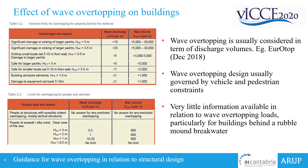Wave overtopping is usually considered in terms of discharge volumes. The tables here on the left are extracted from the Eurotop manual, which gives guidance on calculating overtopping volumes for coastal defence structures and the recommended mean limits for volumes of wave overtopping. The most onerous conditions are those for the design of people on a breakwater, as well as the effect on boats or structural building elements behind the breakwater. Because this is how wave overtopping is usually considered, there's very little information on the loading due to wave overtopping, particularly if you're looking at a building structure.